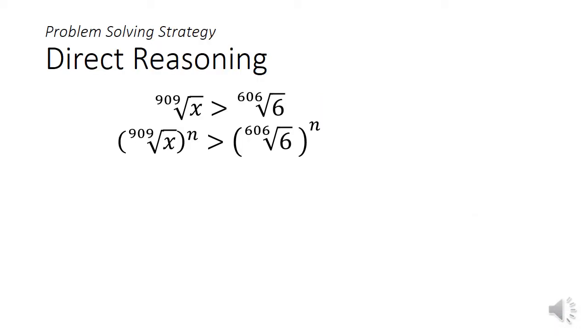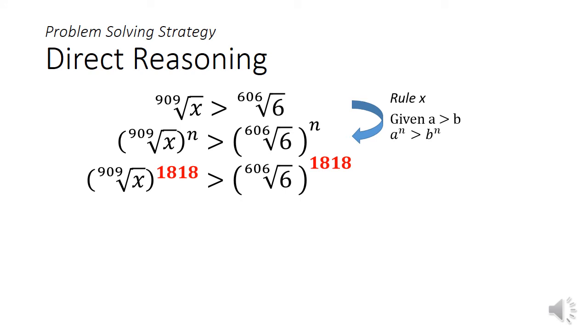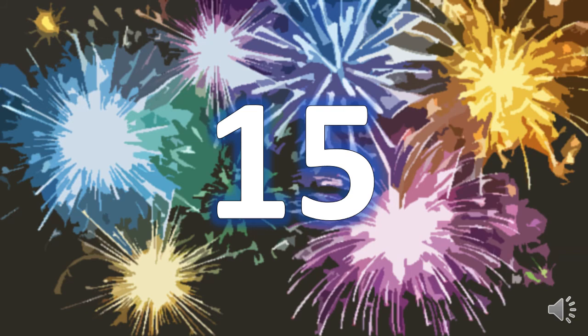We are going to approach this question using the index laws as fuel for direct reasoning. If we use rule 10, we can raise both sides to the power of n and still maintain the inequality. So a good choice of power is 1818, the LCM of 909 and 606. Rule 9 will help us simplify the indices on both sides, giving us x squared to be greater than 6 cubed. Some quick checking of square numbers will tell us that the next bigger square number is 15 squared, which is 225. So the answer is 15. Did you get it?